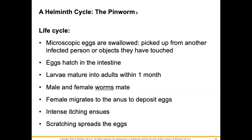Once the eggs reach the intestine, they hatch. The larvae mature into adults within about a month. Then the male and female worms mate, and the female migrates to the anus to deposit eggs. This causes intense itching. If a child scratches, they can spread the infection to other kids, parents, grandparents, and others. Keep those hands washed.